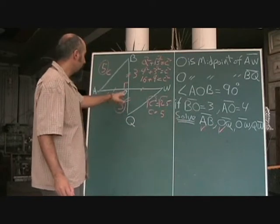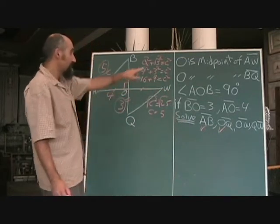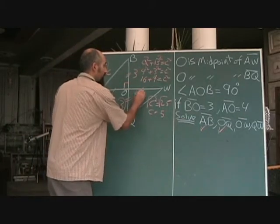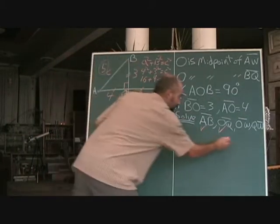Then they got OW. Well, that's the same as this because of the first point they gave us. So if that was 4, then this has got to be 4. So we just solved for this one.